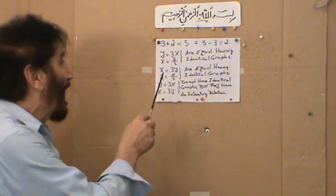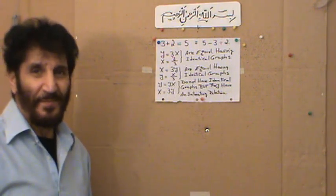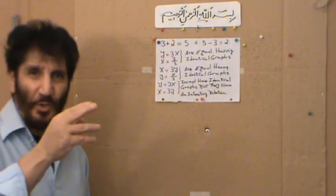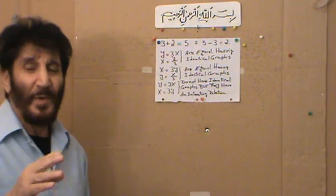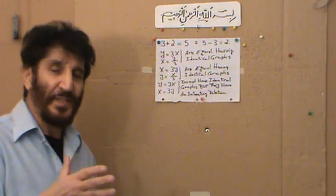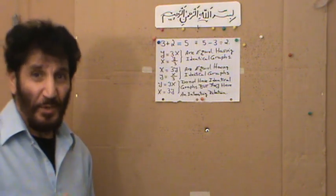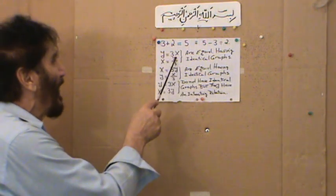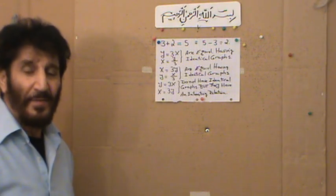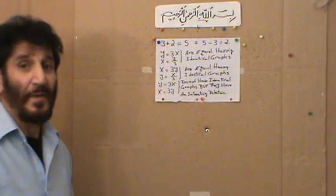Now y equals 3x and x equals y over 3 are equivalent — they have exactly the same graph. By the way, when students hear the word 'graph' they think of the geometric drawing, but the graph in 2D means the set of ordered pairs — that is the meaning of the graph. I distinguish between the analytical graph and the geometrical graph. y equals 3x and x equals y over 3 have exactly the same analytical graph and the same geometrical graph.